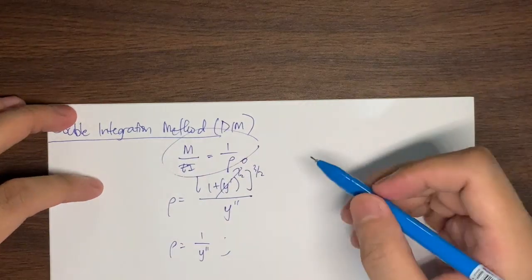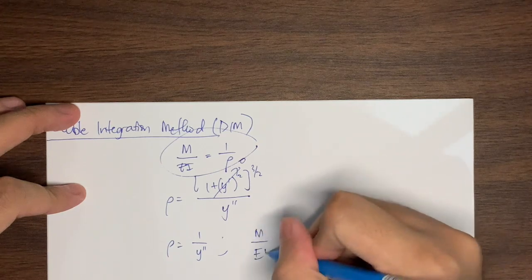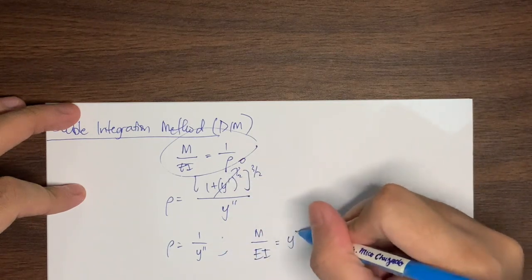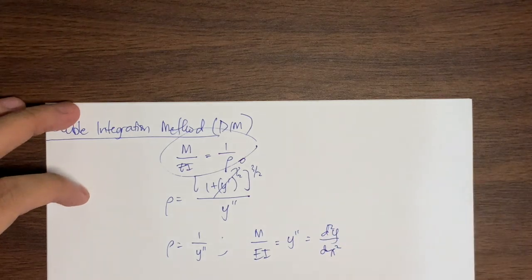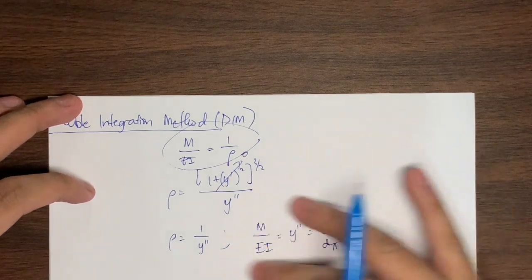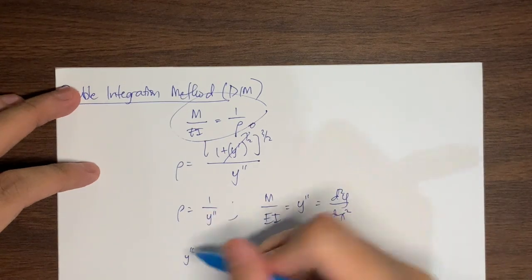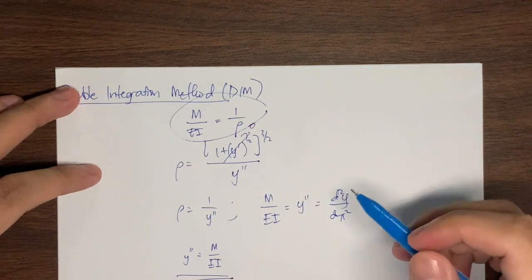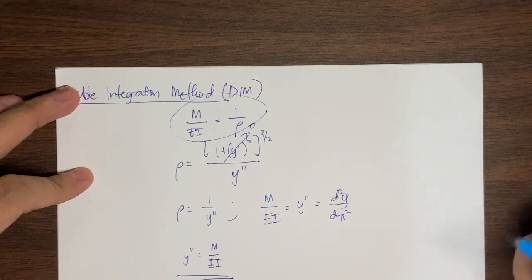Substituting this approximation, M over EI equals 1 over (1 over y double prime), which simplifies to y double prime — the second derivative of y with respect to x. So we have y double prime equals M over EI. Here, M is defined as the moment or moment function. The value of M depends on the location along the beam, meaning the moment is a function of x.